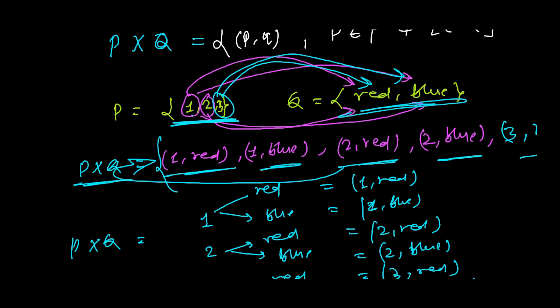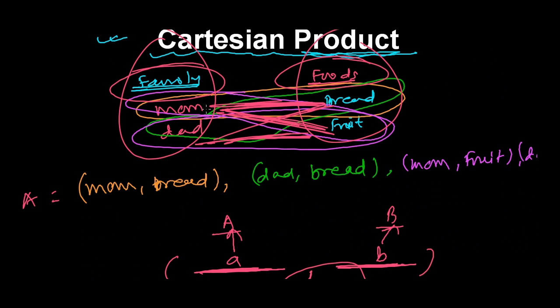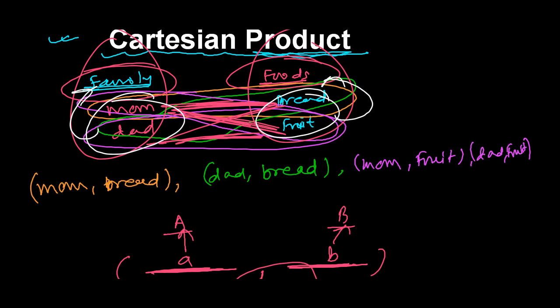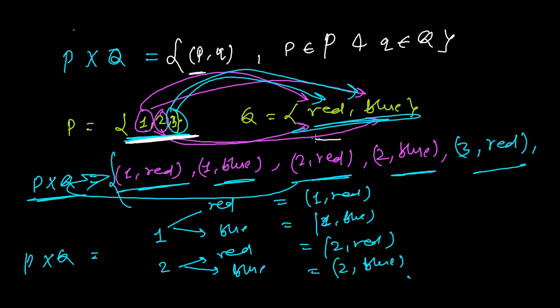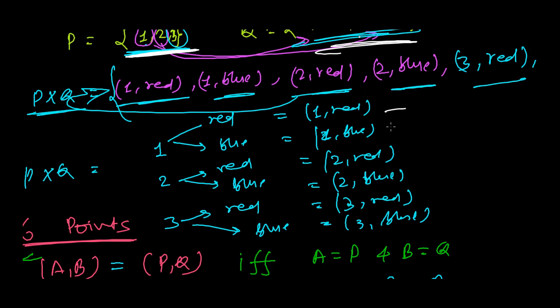You can see the example also. When we have two members in the first set and two members in the second set, then the total possible ordered pairs were 1, 2, 3, and 4. In the second case, if you see three and here we have two, so 3×2 is six, and the total possible ordered pairs were 1, 2, 3, 4, 5, 6.